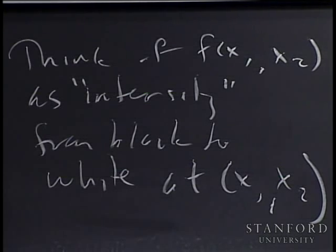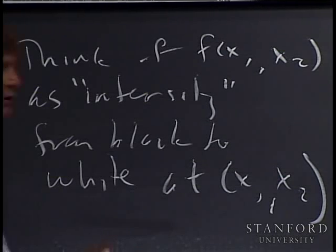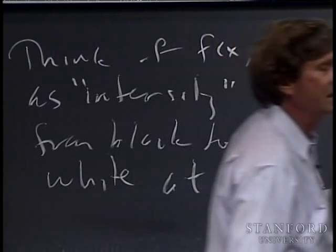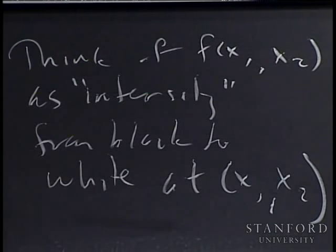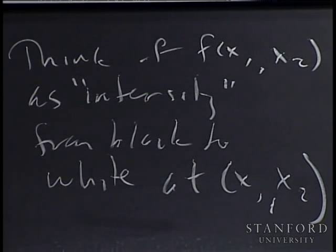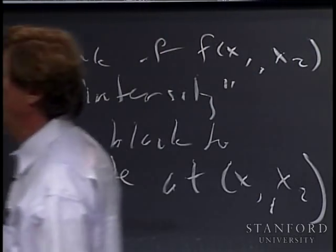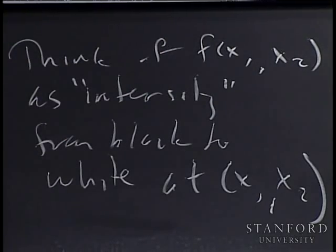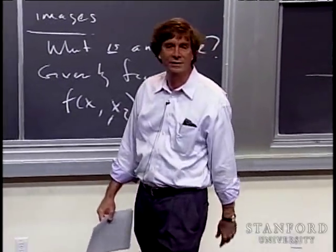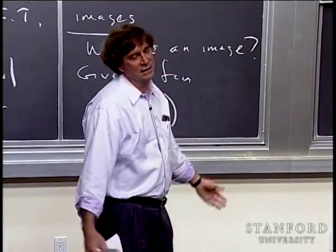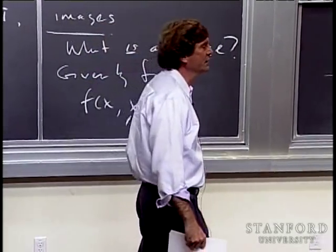Thinking about black and white images: you think of f(x1, x2) as ranging from 0 to 1, from black to white — the intensity from black to white at the point x1, x2. As x1 and x2 vary over a region of the plane, the intensity varies, and that's what makes a black and white image. Color is more complicated, but at least for black and white images, that's what you get.